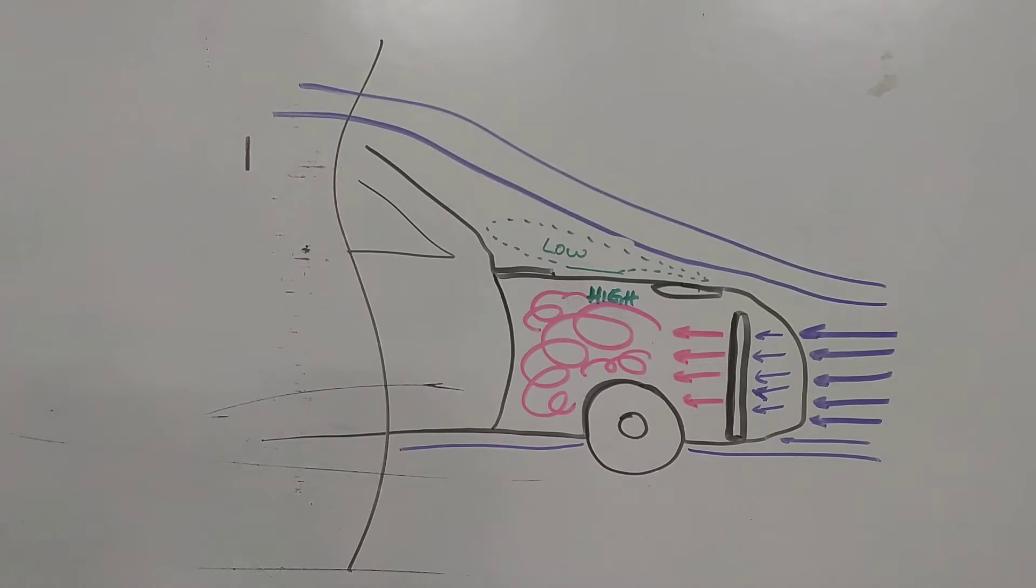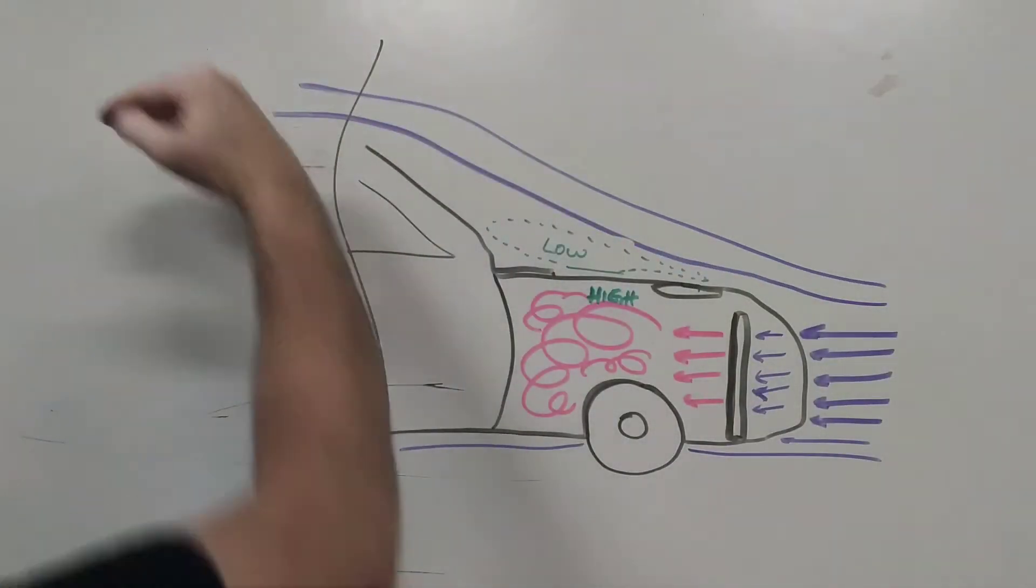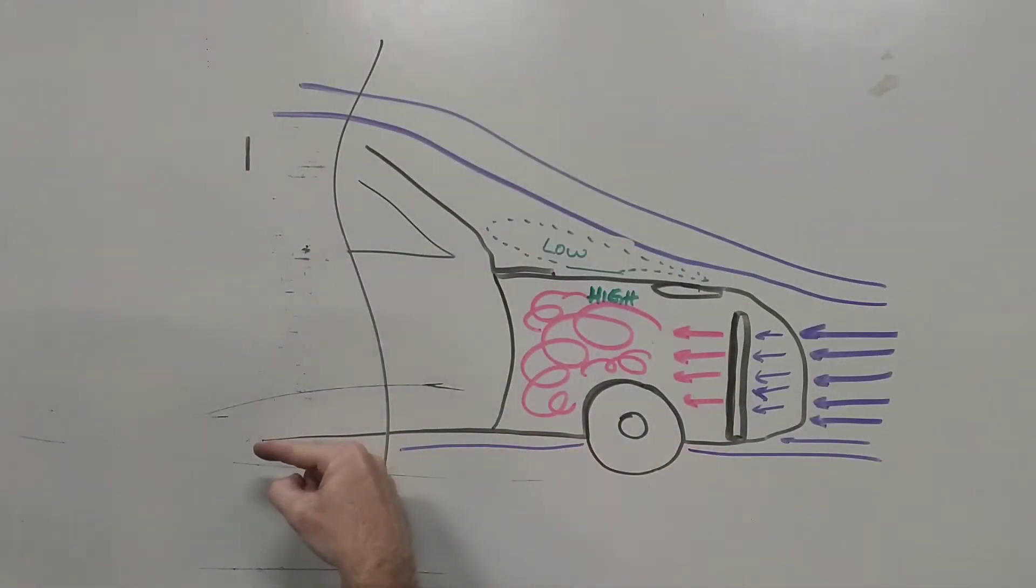Alright so here is a simple diagram of your car. So obviously you have cold air that comes in through your radiator, comes into your engine bay, air goes up and over the car, also air goes underneath your car.